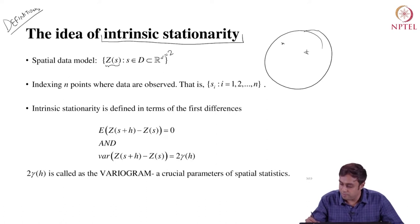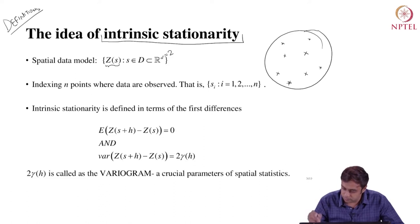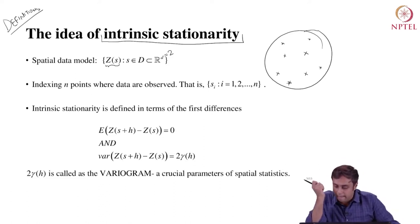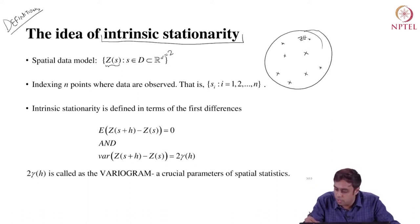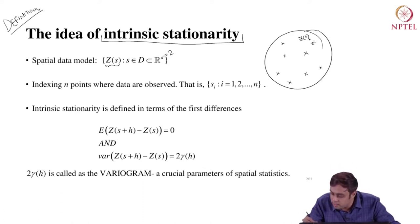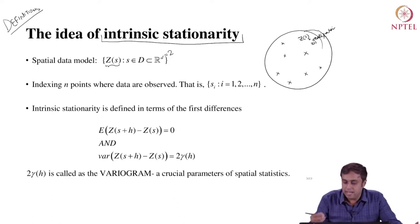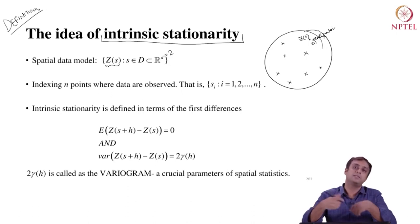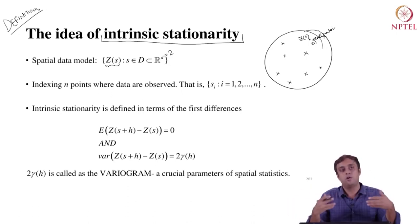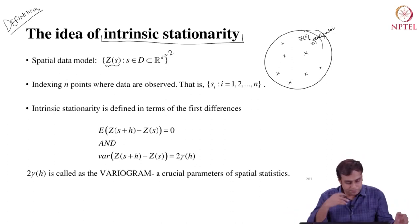Here I have data at different locations. The data at each location are given by random variable Z(s), and small z at location s can be thought of as a realization of this random variable. S is simply the index — every location is unique, so I can call it location 1, location 2, location 3, all the way to location n.